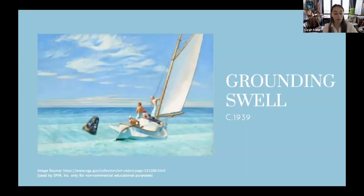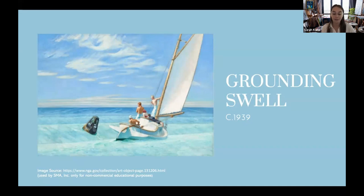In Grounding Swell, Hopper depicts a cat boat occupied by four men and a woman facing a growing swell. The artist made numerous studies of boats as a child growing up in Nyack, and his passion for seascapes and nautical subjects is noted throughout his work. But as with many of his pieces, his painting goes well beyond its role as a seascape. Despite what looks to be a clear day, the dark shape of the bell buoy symbolizes impending doom, as does the boat's dramatic dip.